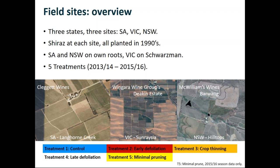The first treatment was simply to monitor the vineyard management and do nothing at all - that's our control treatment, T1, shown in blue. The second treatment was an early defoliation treatment, T2, shown in red. The third one was a crop thinning treatment - perhaps the simplest to impose and the adjustment of vine balance most commonly imposed during the season already.